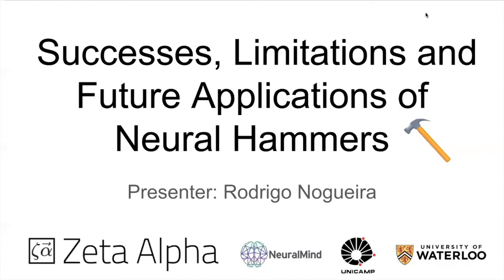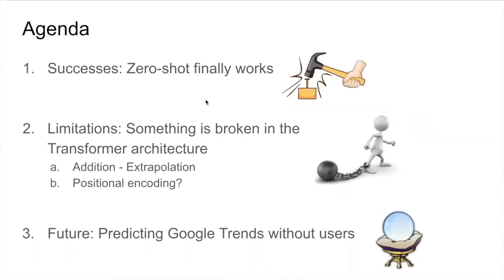My name is Rodrigo Nogira and I'll talk about three things: success, limitations, and future applications of neural hammers. 'Hammer' in this context is our preferred transformer model. The first part covers what many previous talks already hinted at — zero-shot finally works — so this is a positive part of the talk.